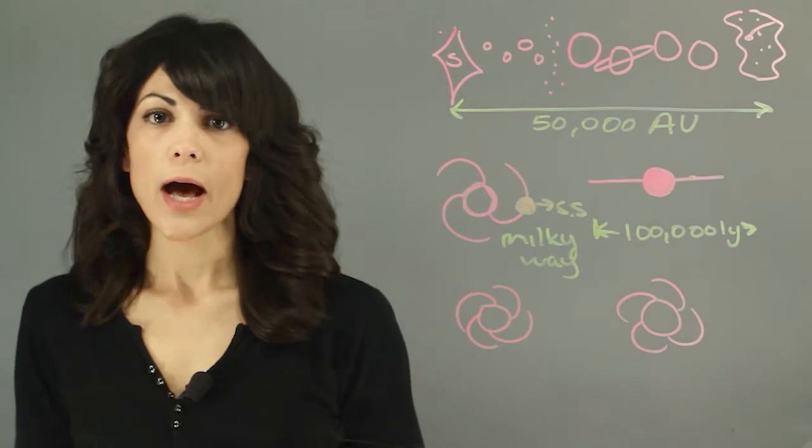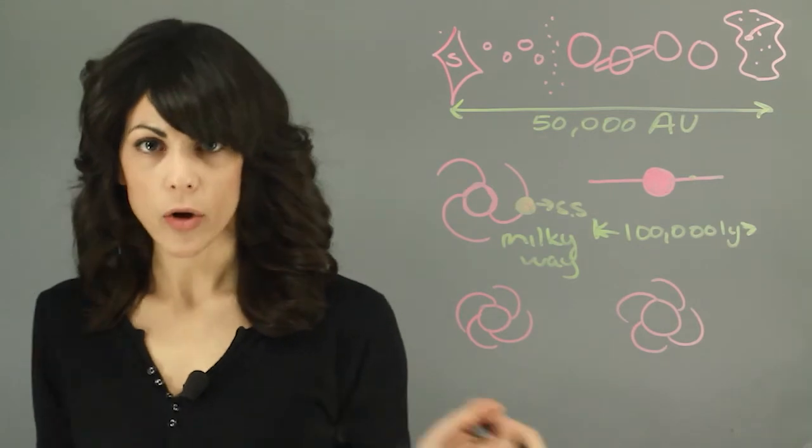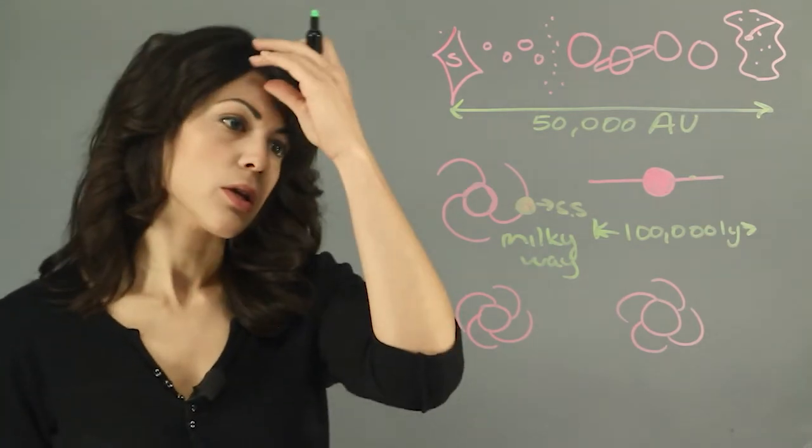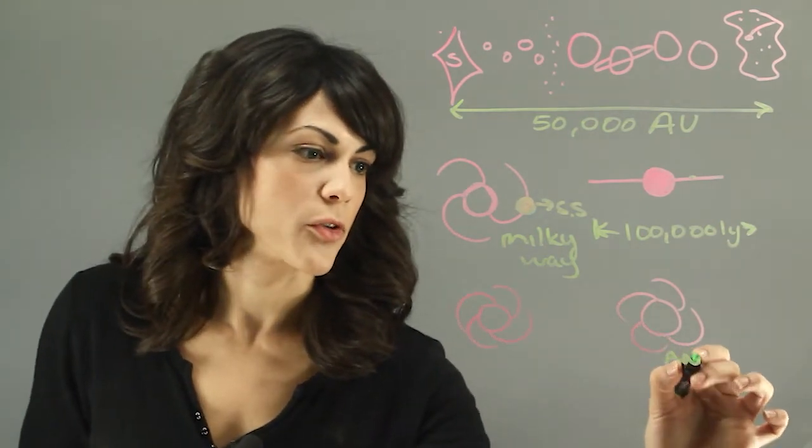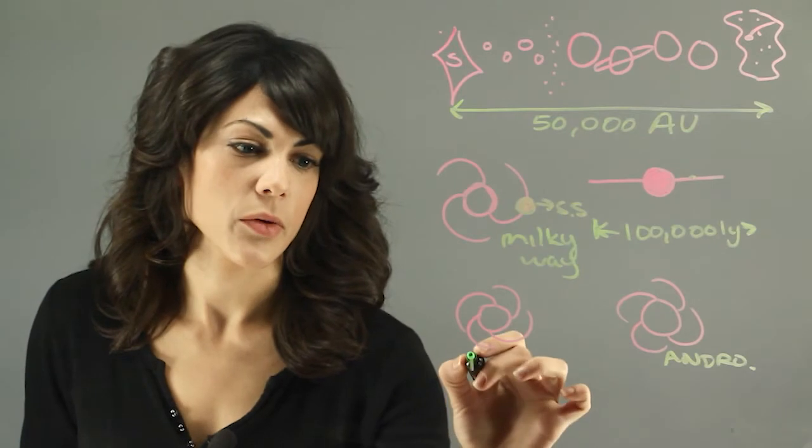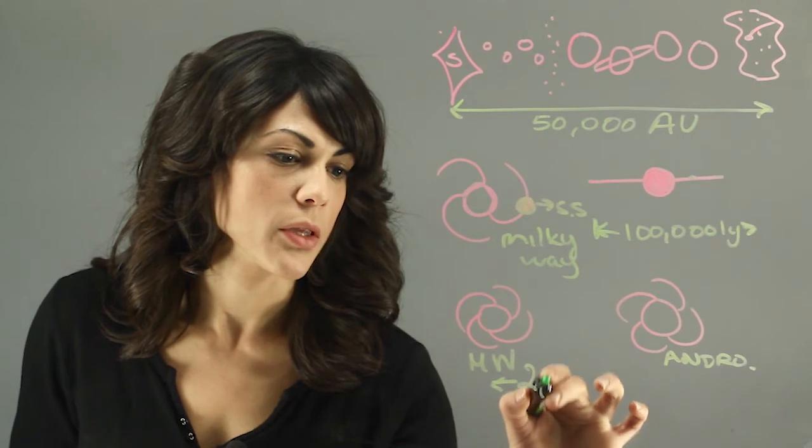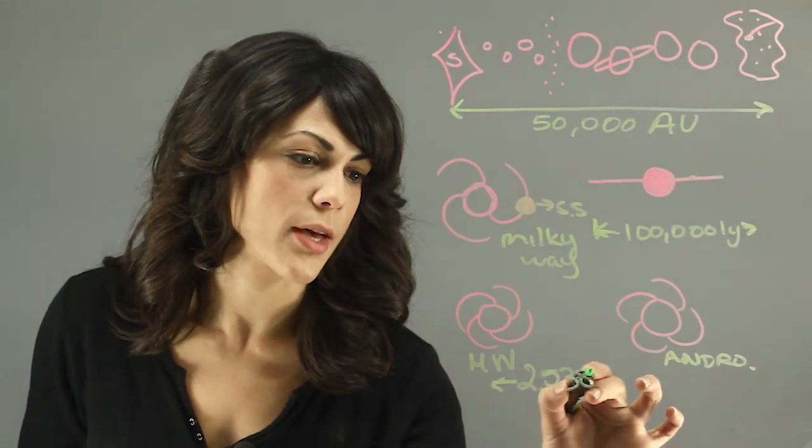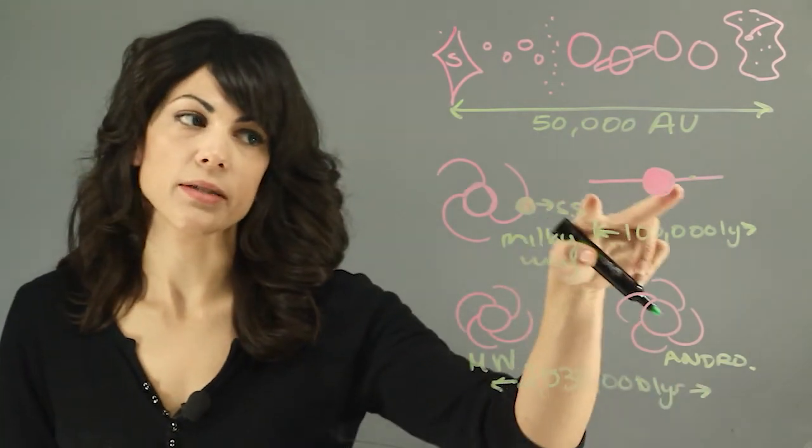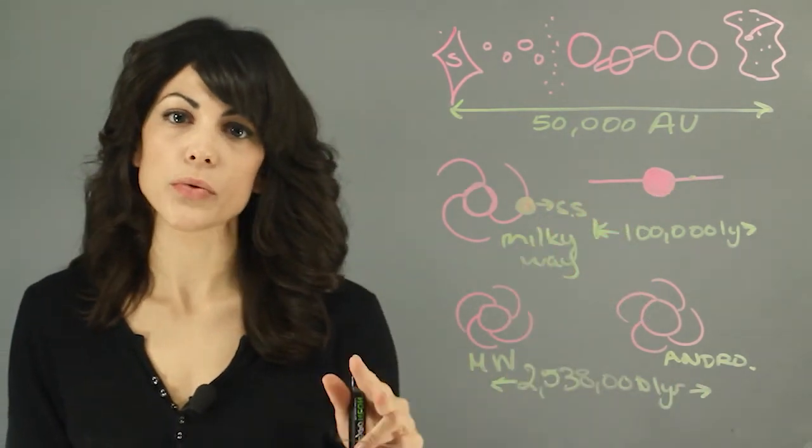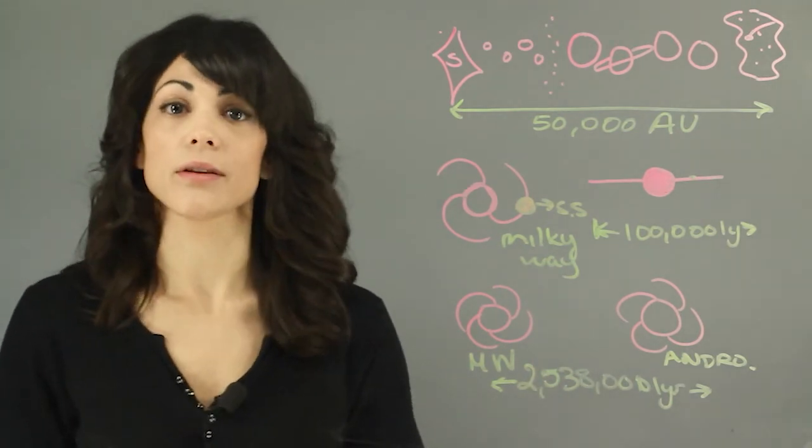Now let's put how big is our galaxy compared to others and how small are we compared to the whole universe. So the nearest galaxy to us is Andromeda. Let's call this Andromeda and this is the Milky Way. The distance between them is 2,538,000 light years. That means we can fit our entire galaxy over two times across from them. So it's very very far away and that's the nearest galaxy.